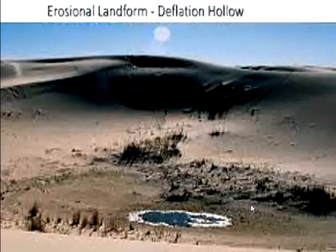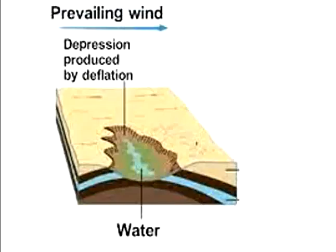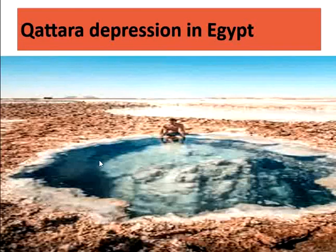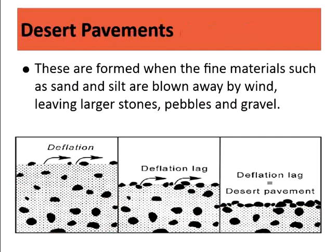Here are examples of deflation hollows — sand materials were present but were carried and transported over a long distance, leaving this depression or hollow in the ground. The example in Egypt has eroded so deeply into the surface that it reached the water table.